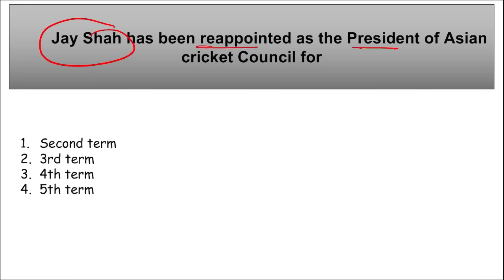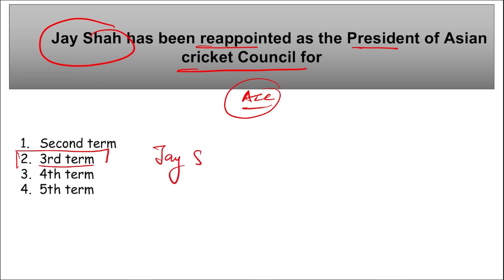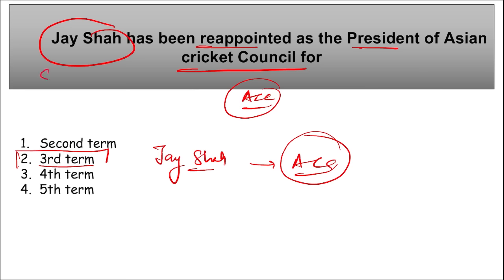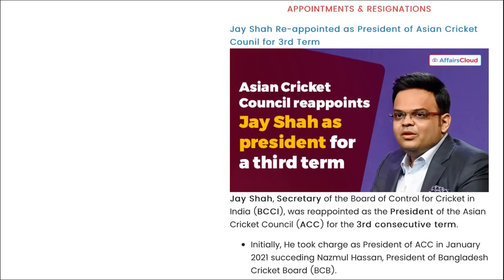Jay Shah has been reappointed as President of the Asian Cricket Council (ACC) for the third consecutive term. Jay Shah is also the Secretary of BCCI — the Board of Control of Cricket in India. The Asian Cricket Council was formed in 1983. Jay Shah is the son of Amit Shah, our Home Minister.